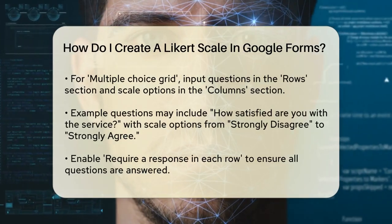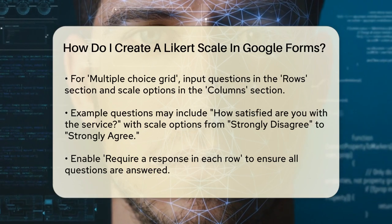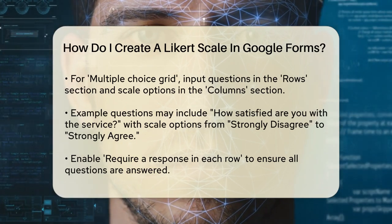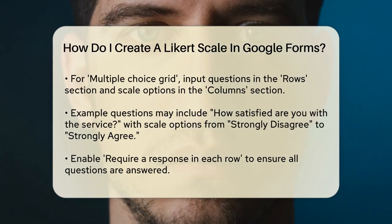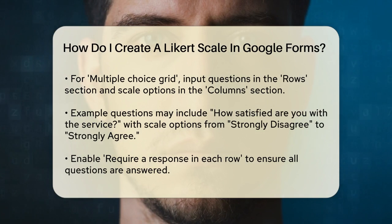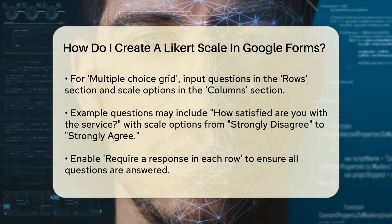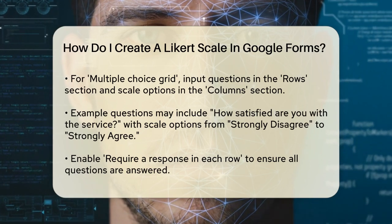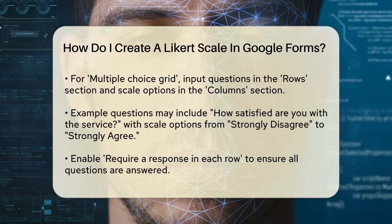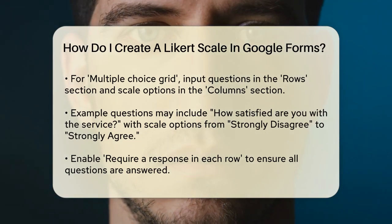If you choose multiple choice grid, you'll use the rows section to input each question you want to ask and the columns section to input your Likert scale options. For example, you might have questions like, "How satisfied are you with the service?" and columns labeled strongly disagree, disagree, neutral, agree, and strongly agree. Make sure to enable the "require a response in each row" toggle if you don't want respondents to skip any questions.